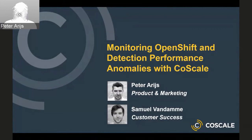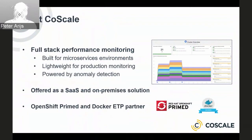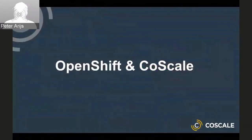Thank you very much, Diane. Let me say a few quick words about CoScale first. We offer a monitoring solution — we call it full-stack performance monitoring — but really focused on microservices environments such as in OpenShift. Our solution is a lightweight solution specifically for production monitoring, and we use anomaly detection to find problems faster. We offer this as SaaS as well as on-premise, and we are firmly embedded in the container ecosystem as an OpenShift Prime partner, but also a Docker ecosystem technology partner.